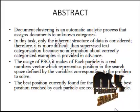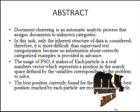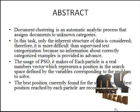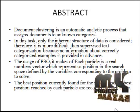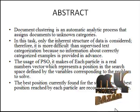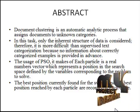Document clustering is an automatic analytic process that assigns documents to unknown categories. In this task, only the inherent structure of data is considered. Therefore, it is more difficult than supervised text categorization because no information about correctly categorized examples is provided. The usage of particle swarm optimization means that each particle is a real numbers vector, which represents the position in the search space defined by variables corresponding to the problem to solve. The best position currently found for the swarm and the best position reached by each particle are recorded at each cycle.